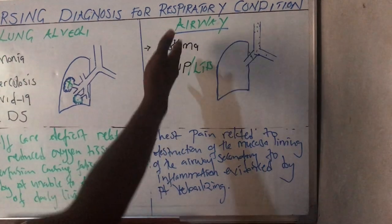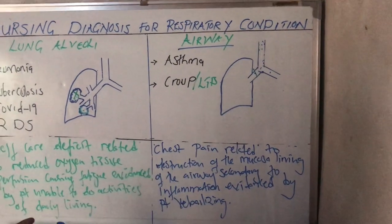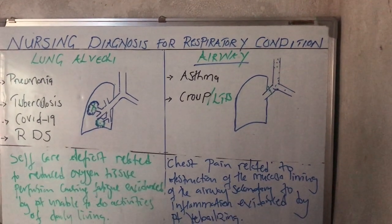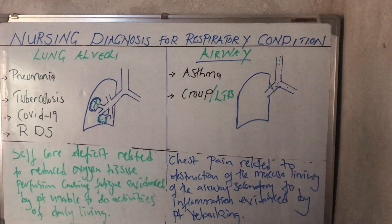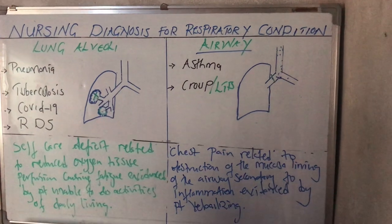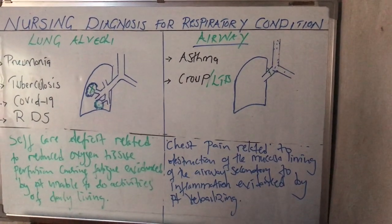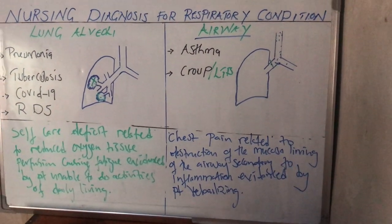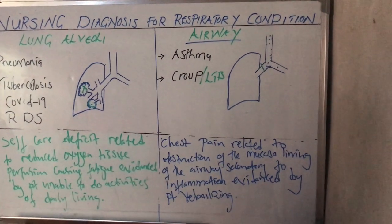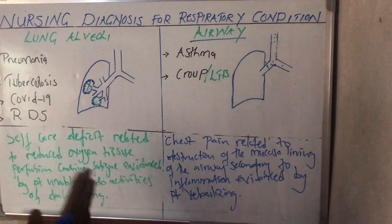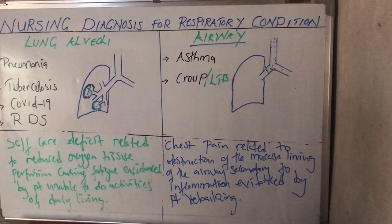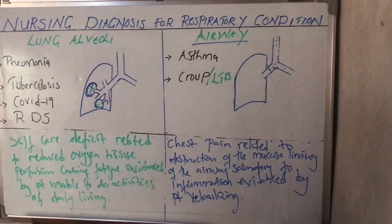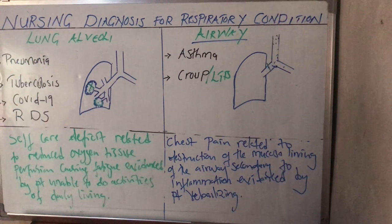The rest of the nursing diagnoses — risk for pressure sore formation, risk for acquiring nosocomial infection, and altered nutrition status — are just the same for airway conditions as for lung alveoli conditions. Remember that altered nutritional status less than body requirements is a risk in all acute conditions, but it becomes an actual problem in all chronic conditions. This was our discussion about nursing diagnosis for respiratory conditions. In the next video, we will discuss in detail how to write the interventions, goals, and how to evaluate the detailed nursing care plan for respiratory conditions.